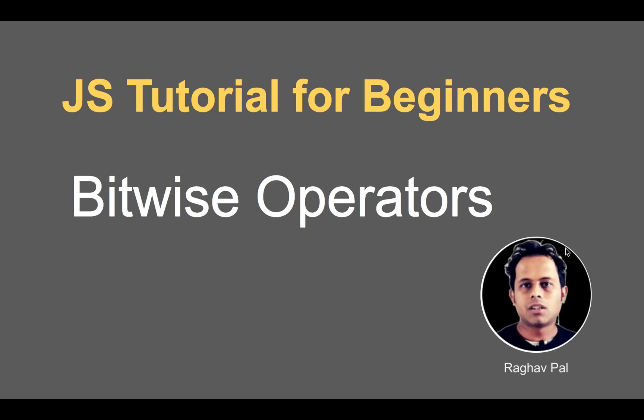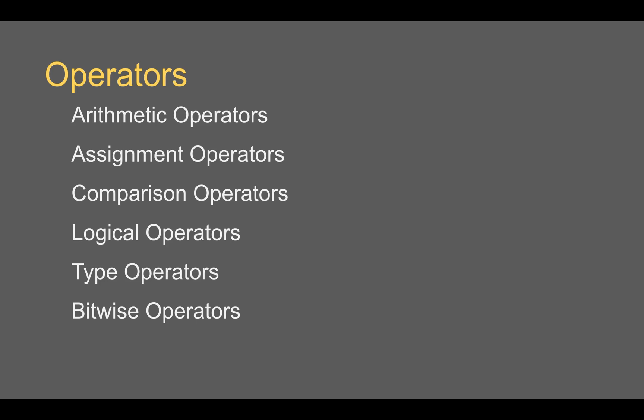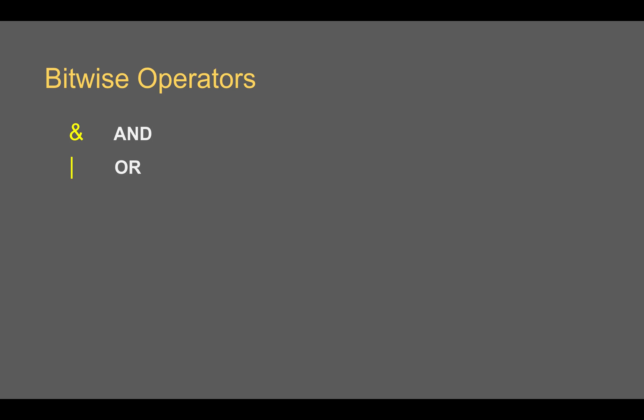Hello and welcome, I'm Raghav, and today we are going to learn about bitwise operators in JavaScript. This is going to be very easy and very interesting. We have already learned about all the other operators. In JavaScript and other programming languages, we have bitwise AND, represented by the ampersand sign, and bitwise OR, represented by the pipe symbol.